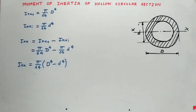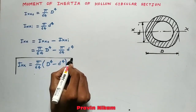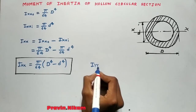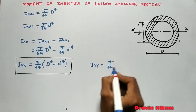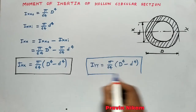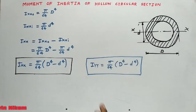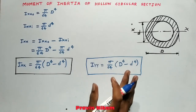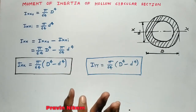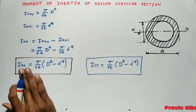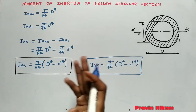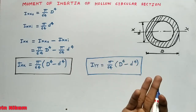This is the formula for moment of inertia of a hollow circular section about the x-axis. Similarly, about the y-axis the formula is the same: Iyy = π/64 × (D⁴ − d⁴). You can also find the polar moment of inertia by adding these two values, and the radius of gyration about both axes using their respective formulae.